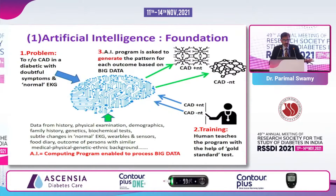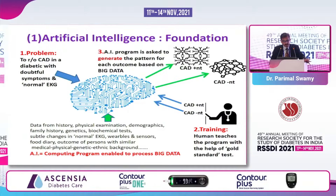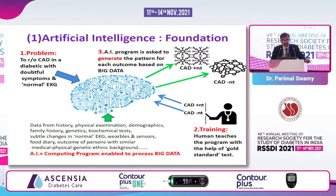I am describing the basic structure of an artificial intelligence system. It is a system which can compute or process a big amount of data — which we call big data. A common, usual, and important but complex problem is given to the AI system. Human beings, with the help of a gold standard test, tell the AI system which outcome is correct — for example, whether the patient has coronary artery disease or not, based on coronary angiography or perfusion scanning. Then the AI program is asked to generate the pattern for each outcome based on processing the big data. That is called the training of the AI system.